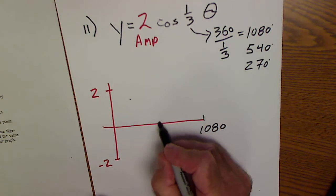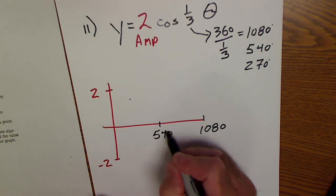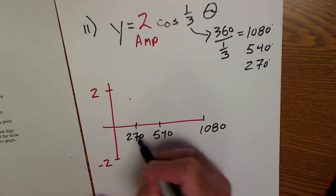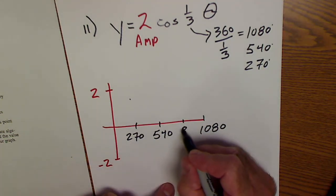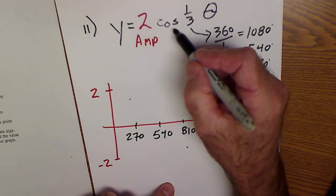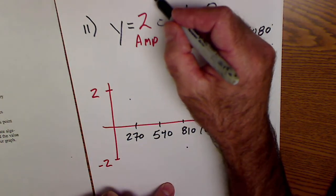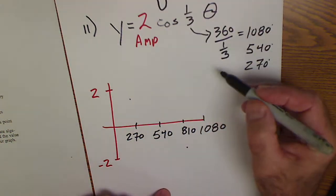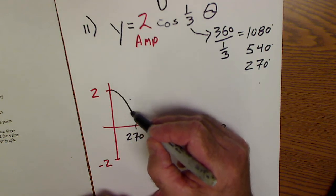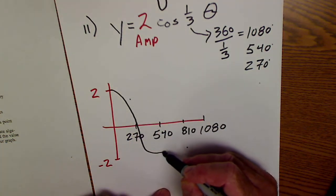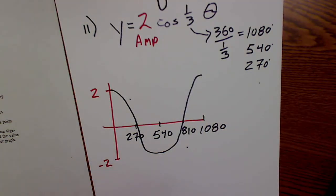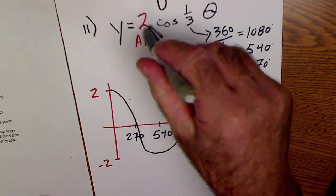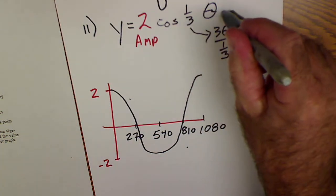A quarter at 270. And then a three-quarter at 7, 8, 10. This is a cosine curve. So cosine starts up and ends up. So it's going to start right here. Cross right there. End at 540. Cross and go back up. So that's what y equals 2 cosine and 1 third theta looks like.